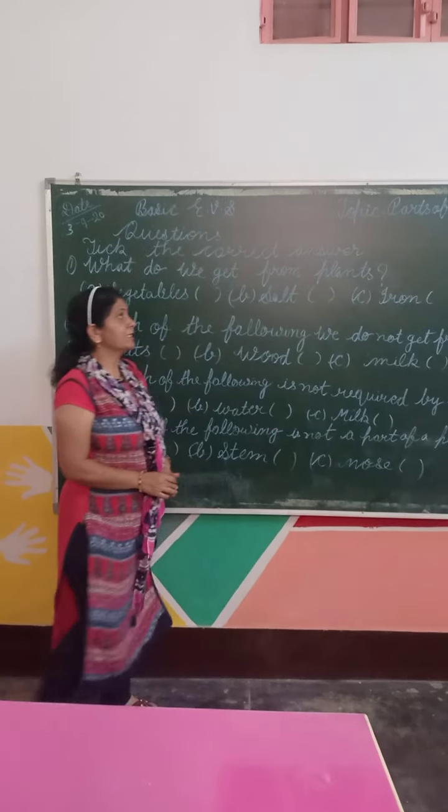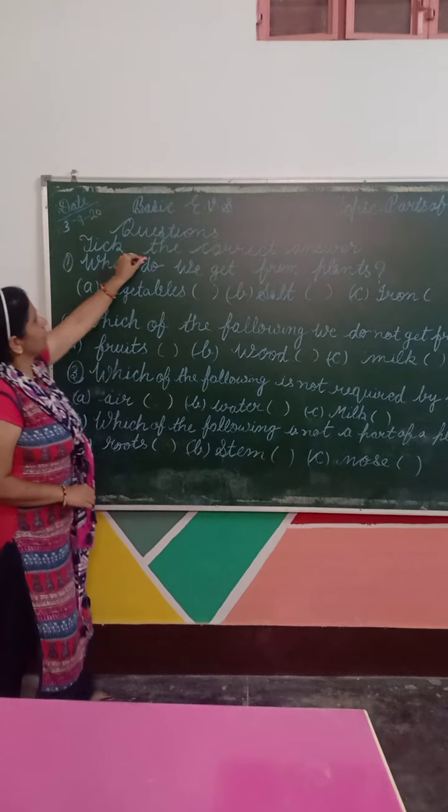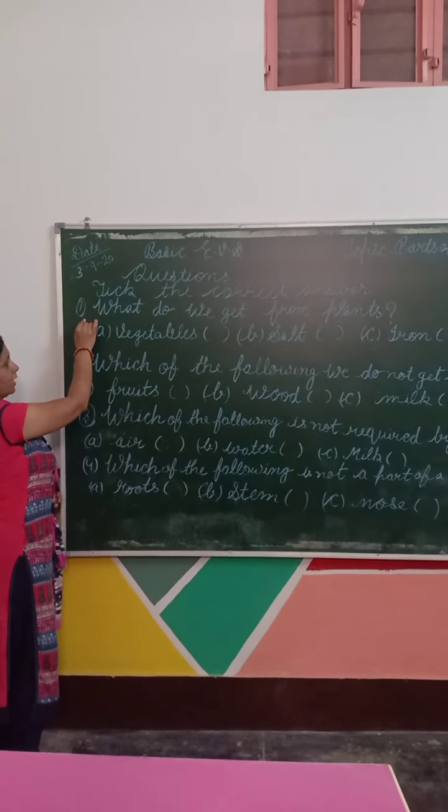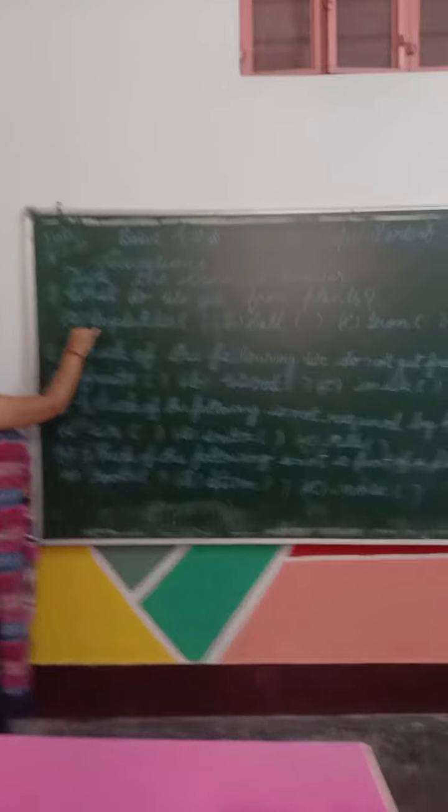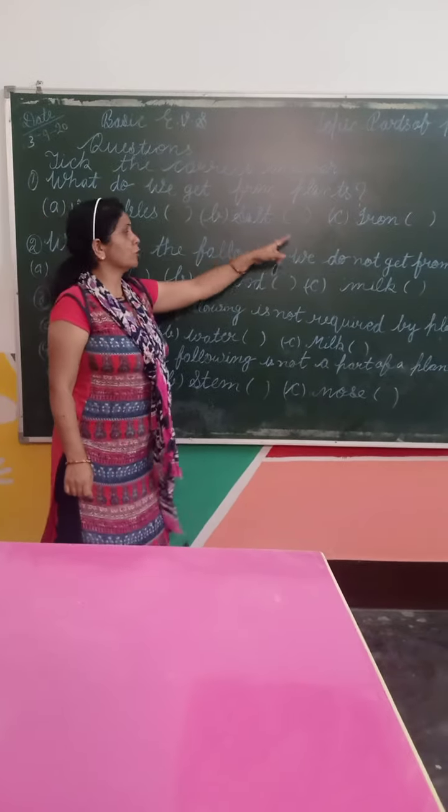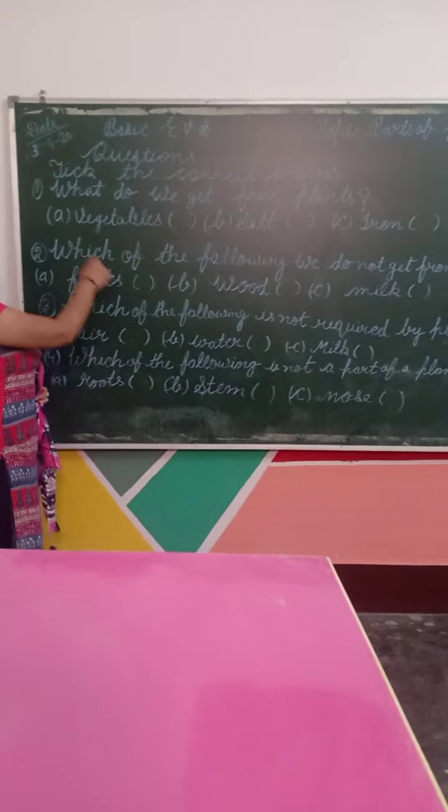Okay students, Parts of Plants. We have to take questions. Pick the correct answer. Students, question and answer are three options. The right answer will be ticked. Okay students, look at the blackboard.